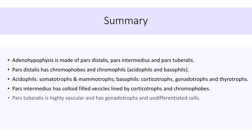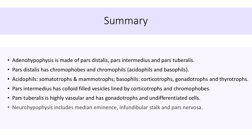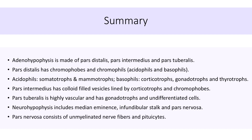Pars tuberalis is a highly vascular area containing gonadotroph cells and undifferentiated cells. Neurohypophysis includes median eminence, infundibular stalk, and pars nervosa. Pars nervosa consists of unmyelinated nerve fibers and pituicytes.